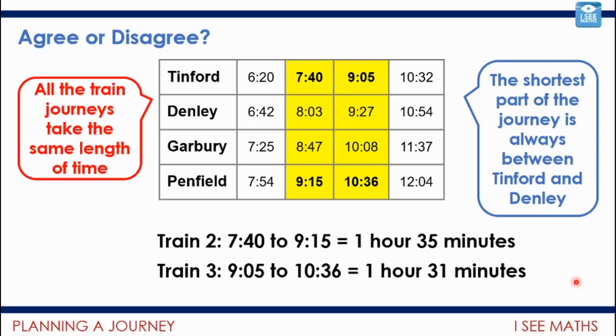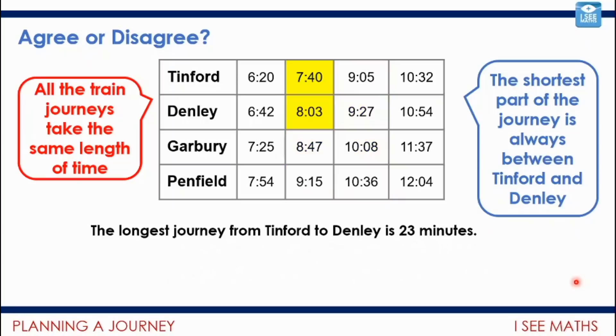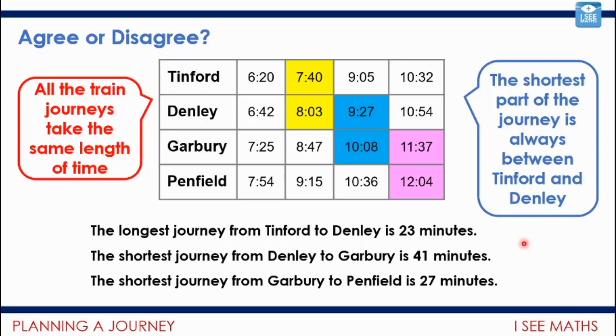The shortest part of the journey is always between Tinford and Denley. Well, the longest journey time between Tinford and Denley is this one, 23 minutes. Are any of the journeys faster than that? The shortest one from Denley to Garbury is 41 minutes, so that isn't. The shortest journey from Garbury to Penfield is 27 minutes. So yeah, it is true that the shortest part of the journey is always between Tinford and Denley.